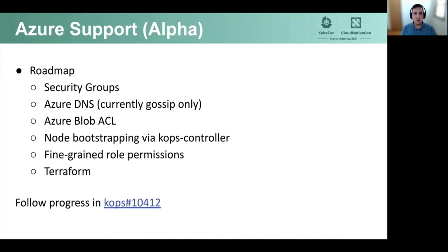The Azure roadmap includes: Azure DNS to allow the Kubernetes API to be accessed via domain name; blob ACLs for finer-grained permissions on state store objects; Azure nodes joining clusters using kops-controller similar to AWS; and allowing Azure resources to be defined in Terraform, similar to existing support for AWS and GCP. If you're interested in Azure support, please give it a try and subscribe to the GitHub issue for updates.